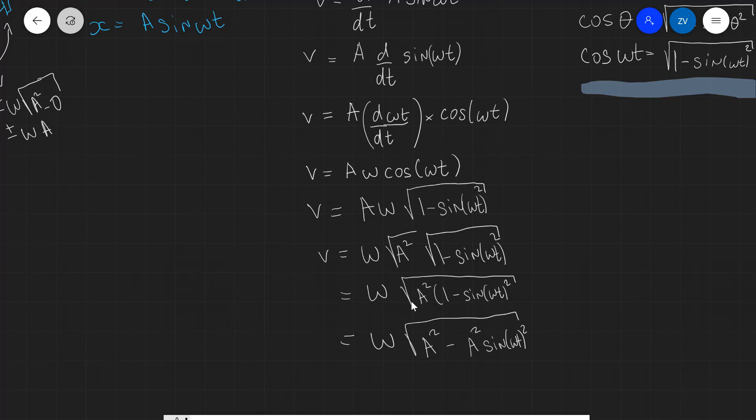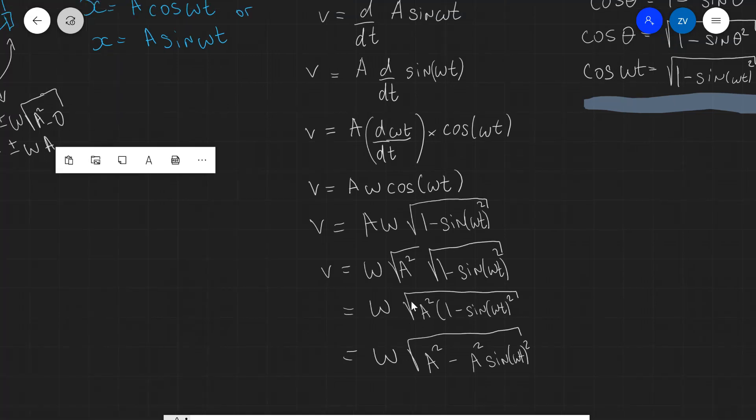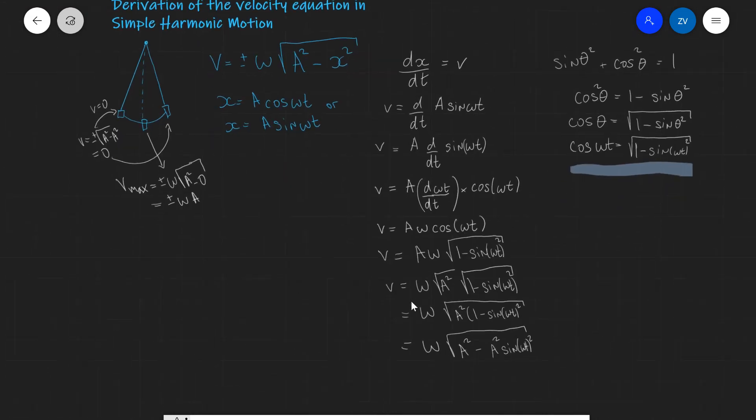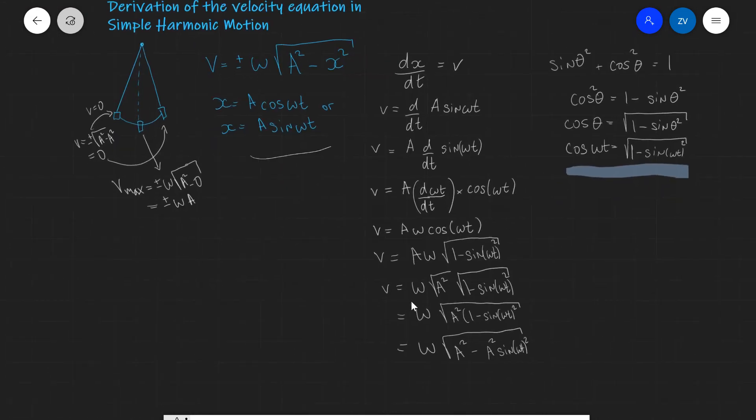Well, hang on a minute. A squared sine omega t squared, this is basically what we started off with, but square rooted, which is just this expression that's been square rooted. And this expression is just x. So, now, we've actually managed to derive our equation because we can now say that v, our speed of the harmonic oscillator, is equal to ω times the square root of A squared minus x squared.